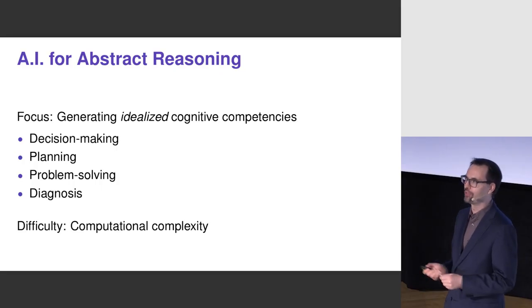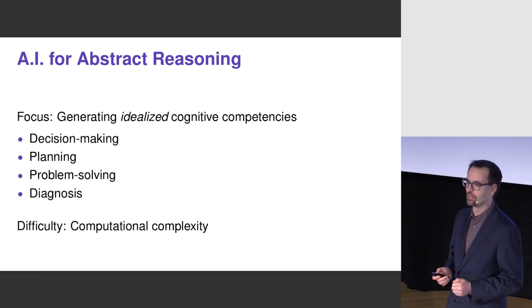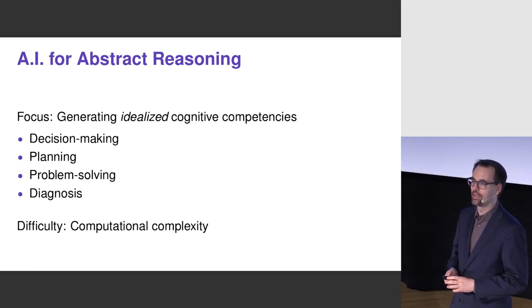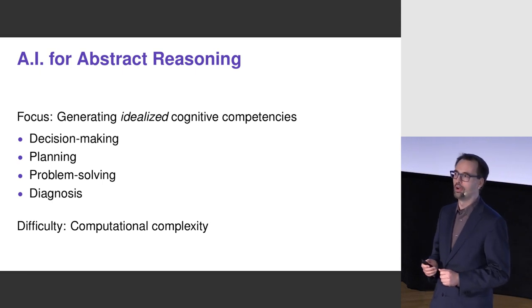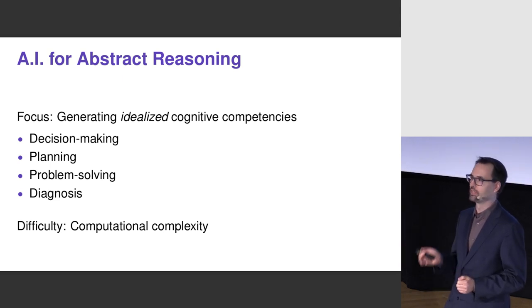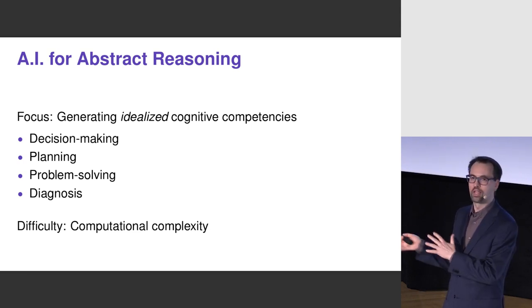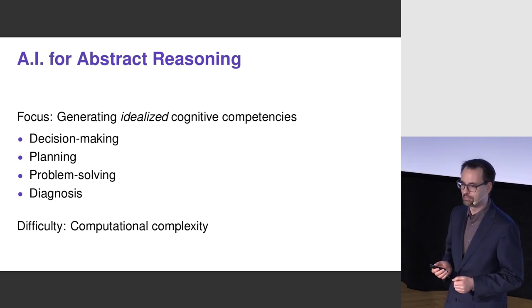There are lots of other kinds of AI, and these are the kinds of things I've been looking at in my research for the past 25 years or more. In these cases, the goal is to model abstract thinking that people do — things like decision making, planning, different kinds of problem solving, and different kinds of understanding of complex systems.